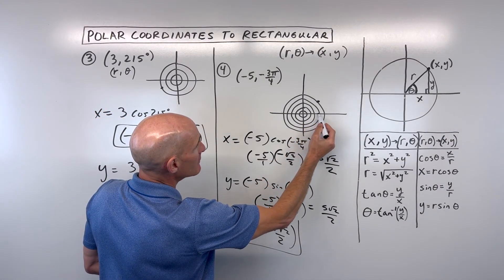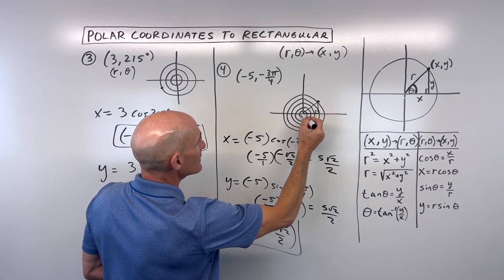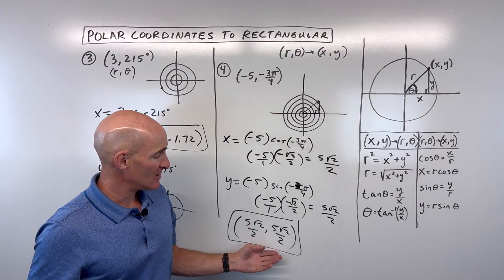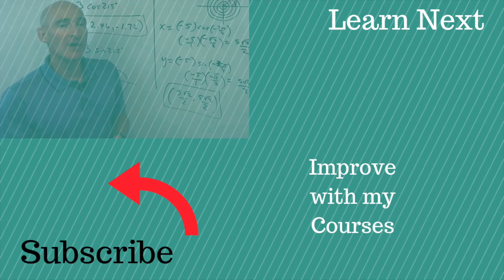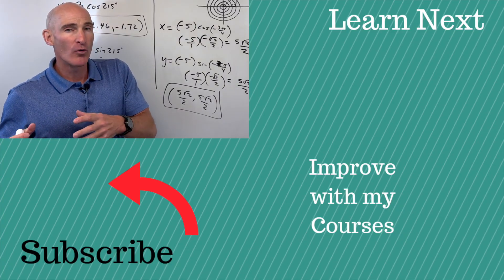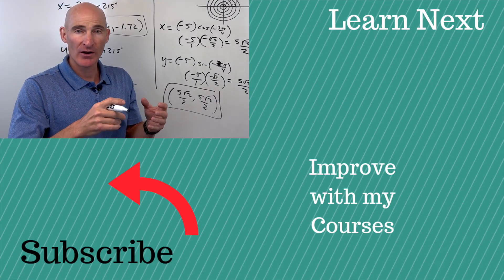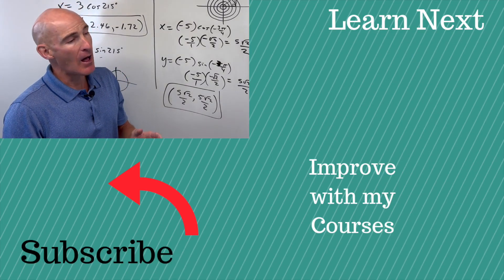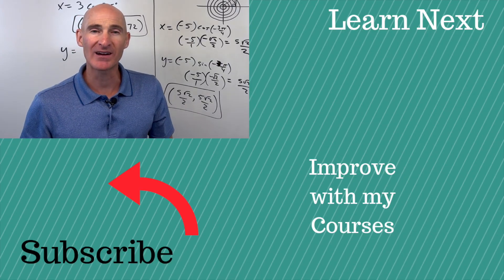We're going right 5√2/2, up 5√2/2 — same point, same location, just in rectangular form. Great job if you were able to follow these four examples. The next thing to understand is how to rewrite equations — if they're in polar form, how to write them in rectangular form and vice versa. I'll put a video right there talking about that concept. Follow me over there and we'll get some more practice — see you there.